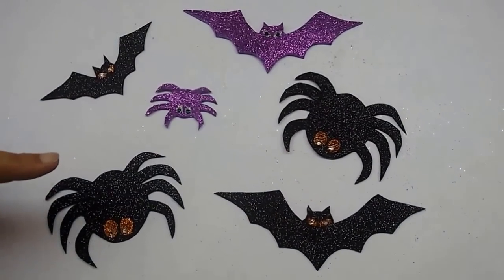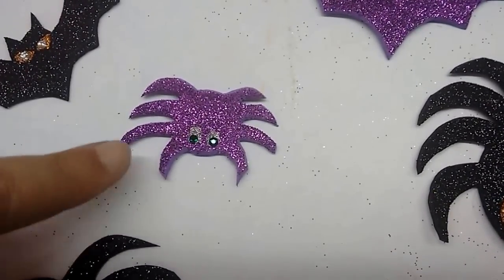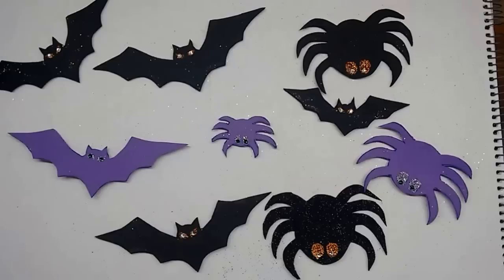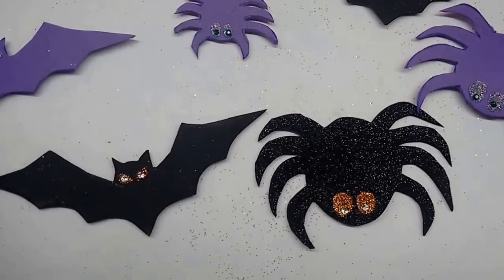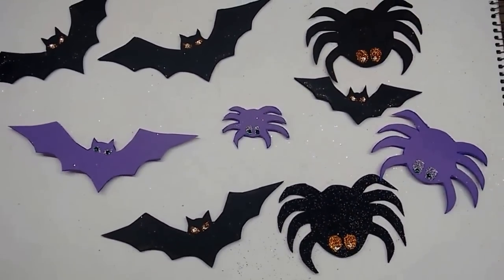And this is how the pieces would look. I have used green and white combination on the purple foam sheet. I have flipped the bats and the spiders over on the plain side and then I have made the eyes on them also. Now let it dry.